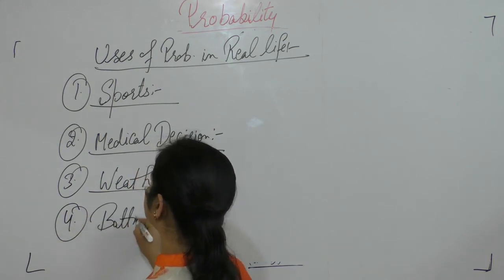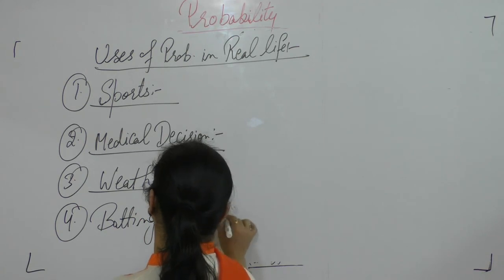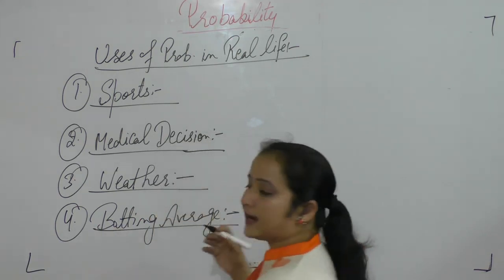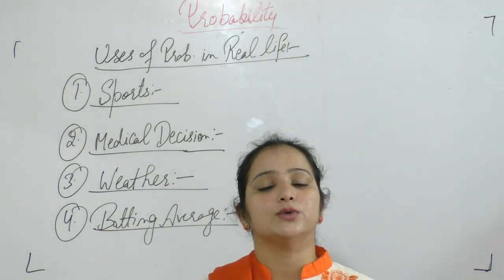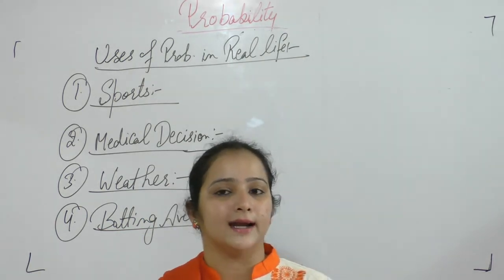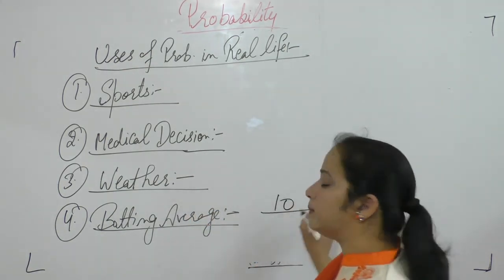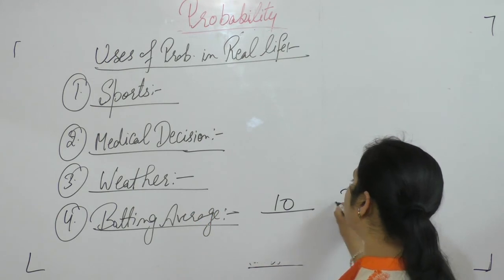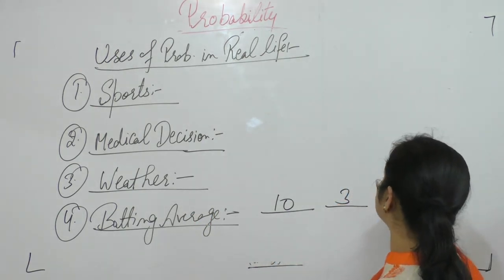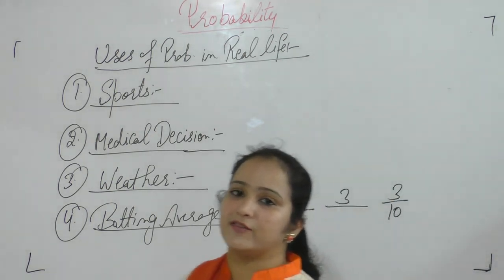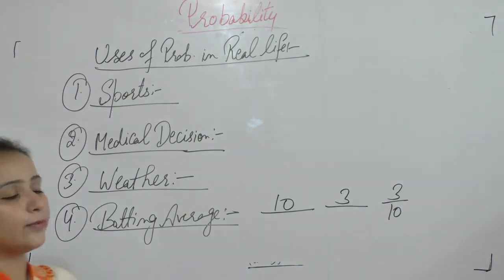We also use probability in cricket when we talk about the batting average. The batting average tells us how many balls a batsman successfully hit. For example, if a person faces 10 balls and hits 3 of them, his batting average is 3 by 10. These are the uses of probability in real life.